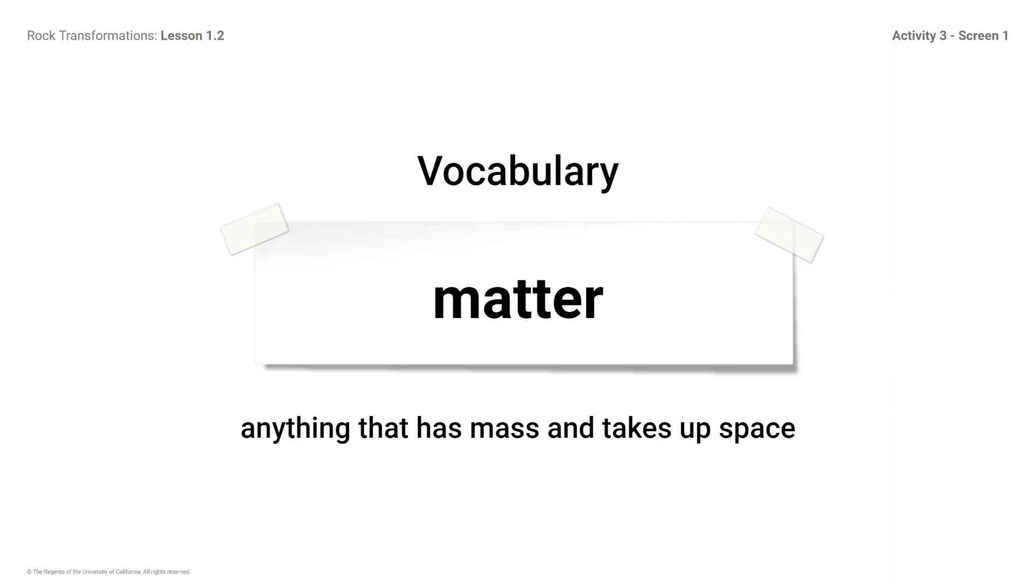Therefore, all rocks are matter because they have mass and take up space. Specifically, rocks are made of minerals, and minerals are a kind of matter. Different rocks have different amounts and types of minerals. A rock's characteristics depend on what minerals it is made of and how that rock formed.